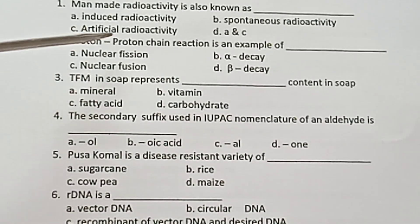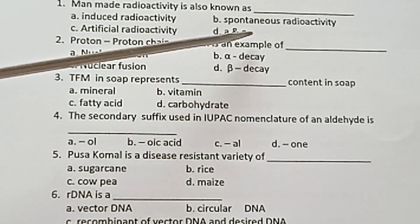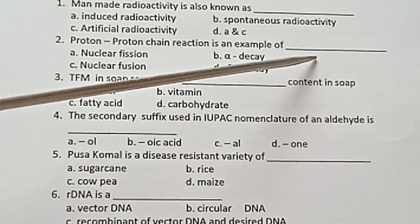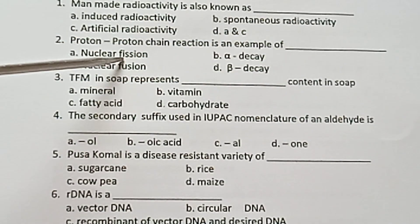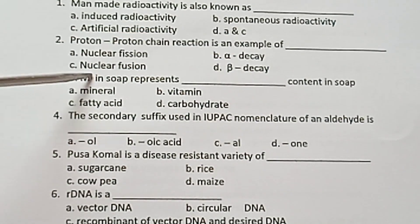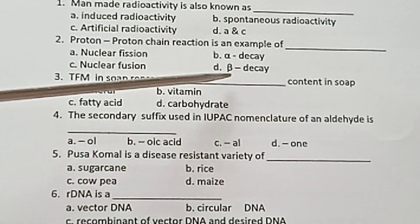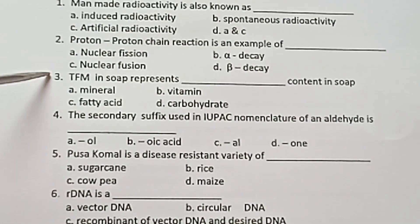Question 2: Proton Chain Reaction is an example of — A) Nuclear Fusion, B) Alpha Decay, C) Nuclear Fission, D) Beta Decay.